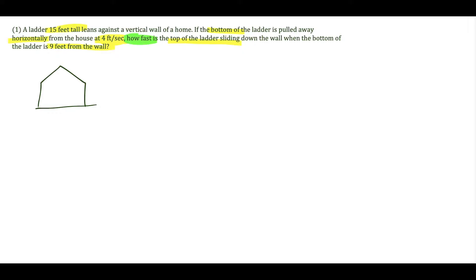If we have a house here with a ladder leaning against the wall going to the ground, we're assuming the house makes a 90-degree angle with the ground. The ladder itself is 15 feet tall and that is going to stay constant — we're assuming the ladder is not growing or changing. It stays fixed at 15 feet.